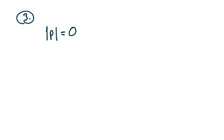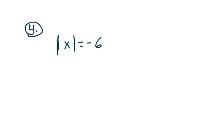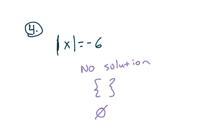What is P when the absolute value of P equals 0? This is where the technical definition really matters. If we say 'make it positive,' 0 is neither positive nor negative — that's strange. But if we say 'distance from 0,' what is the distance 0 is from 0? It's 0. So this is a special case with only one answer: P is 0. What about if the absolute value of x equals negative 6? Distance isn't negative, so there's no solution. No solution can be written as empty braces or the empty set symbol — all mean the same thing.